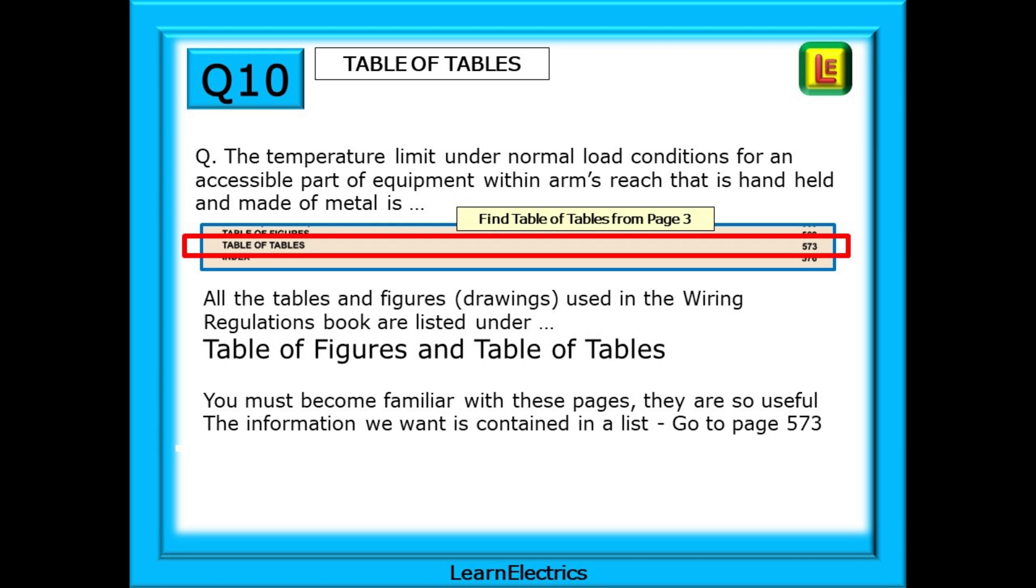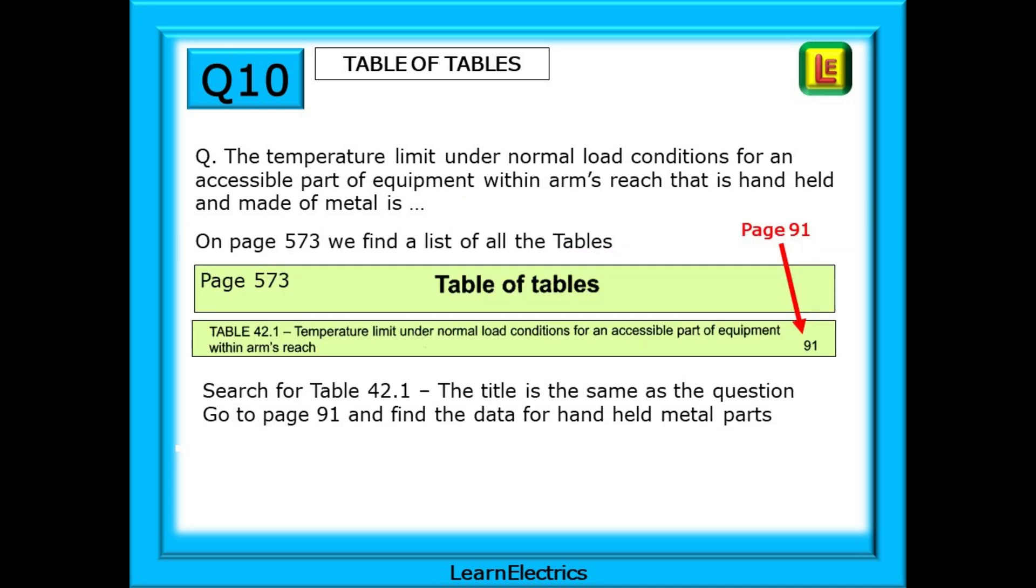Go to page 573 and on page 573 we find a list of all the tables. We need to scan down the list and find a table that matches the wording of the question. It is table 42.1 that we are looking for and the list tells us that the table will be found on page 91. Let's go to page 91 now.